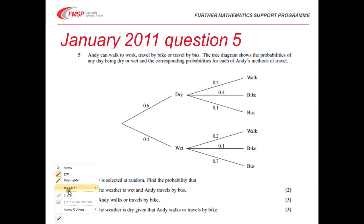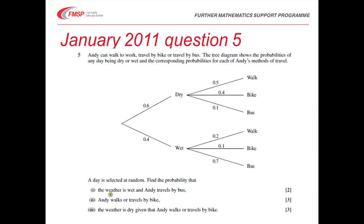We've got a tree diagram question next. Read through the question first. Andy can walk to work, travel by bike or bus, and those probabilities vary according to whether the day is dry or wet. With a day selected at random, we need to find the probability that the weather is wet and Andy travels by bus, then the probability he walks, then walks or travels by bike, and finally a conditional probability question. All of those should be straightforward to calculate from the tree diagram.